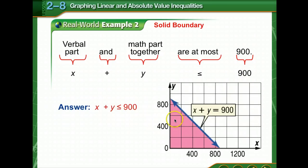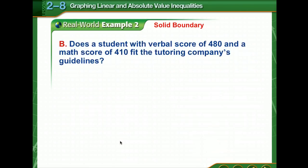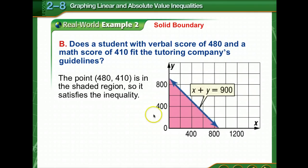And then when we graph it, we determine that everything on this side satisfies the equation. So does a student with a verbal score of 480 and a math score of 410 fit the tutoring company's guidelines? So if x is 480 and y is 410, does it fall in the shaded region? Let's see. Does (480, 410) fall? Yes, it does.